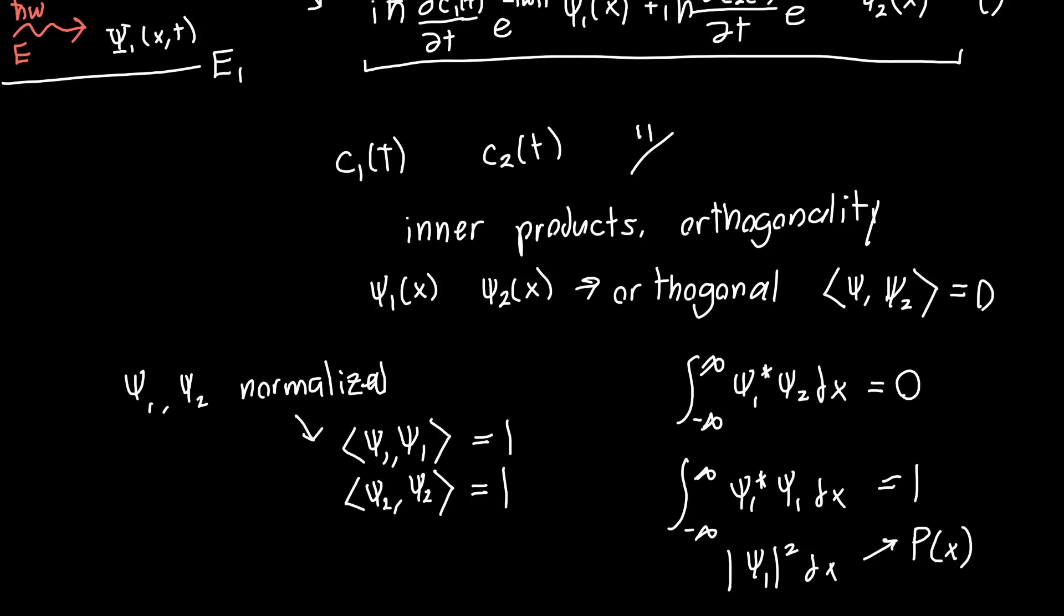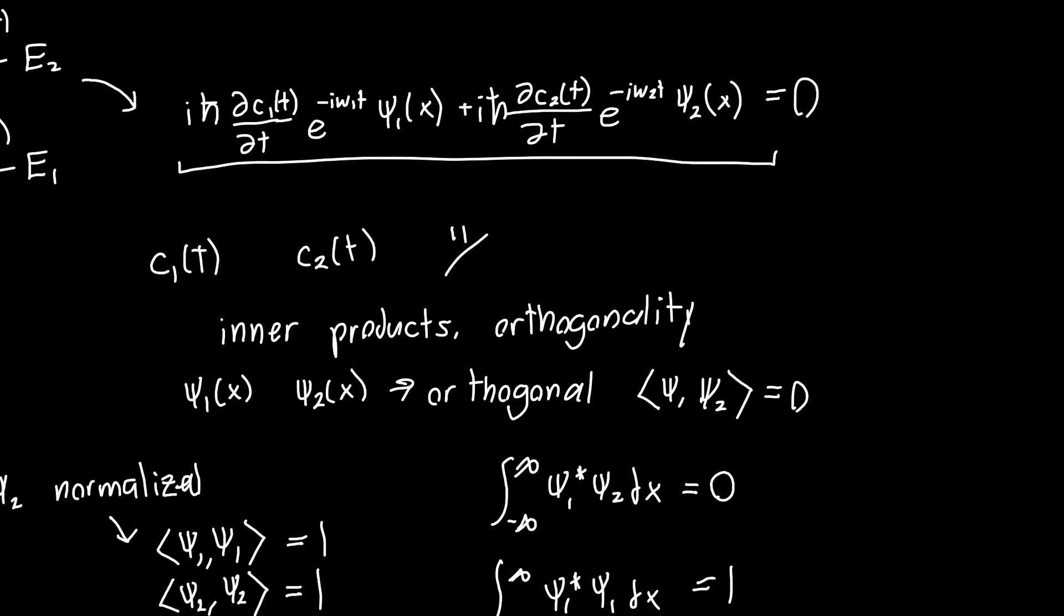And so we can use these facts and take the inner product of this entire function up here. So let's call this whole function f. So first we can take the inner product with respect to psi1, and then we can take the inner product with respect to psi2, and we'll have two different equations. So I suggest you do that now and try to take the inner product yourself and see what you get.